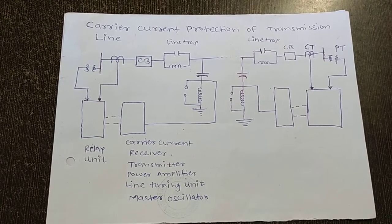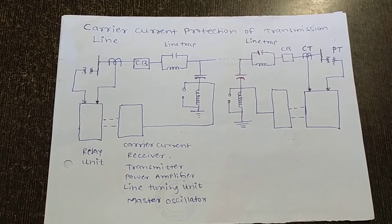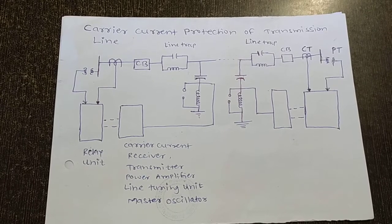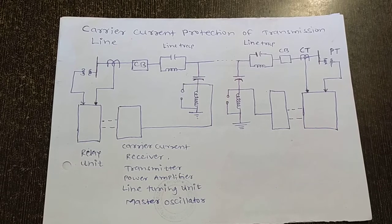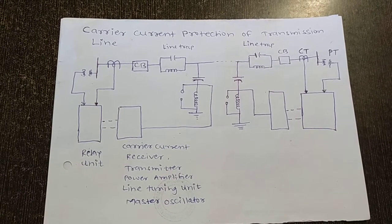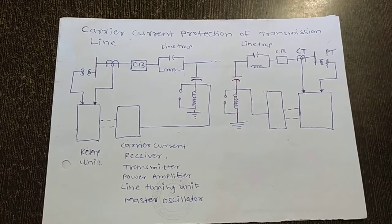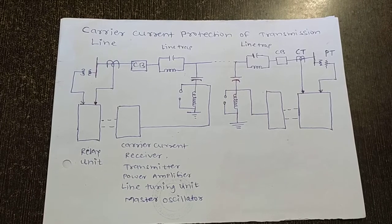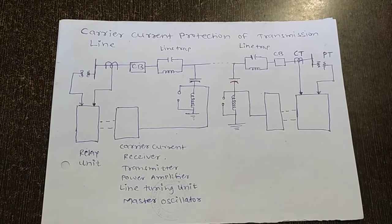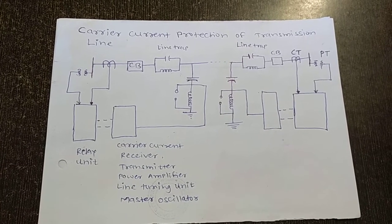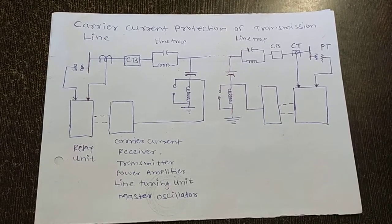The first element is the coupling capacitor. The carrier equipment is connected to the transmission line through the coupling capacitor, which has a capacitance such that it offers low reactance to the carrier frequency but high reactance to the power frequency. Thus, the coupling capacitor allows the carrier frequency signal to enter the carrier equipment but does not allow the 50 Hz power frequency current to enter.